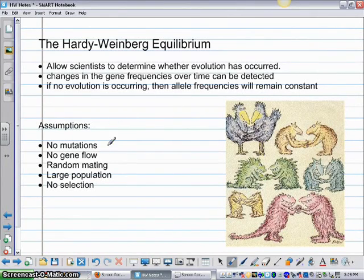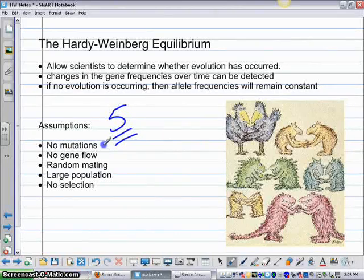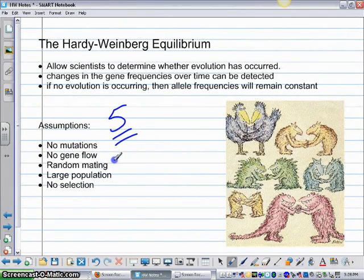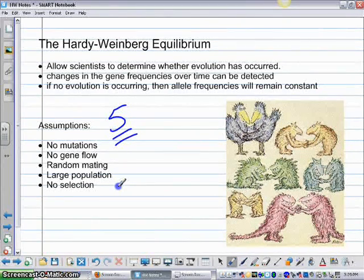So it makes five assumptions, five big assumptions, that there are no mutations within the population. There's no gene flow, so no migration into or out of the population. That there's random mating within the population. There's no sexual selection at all.